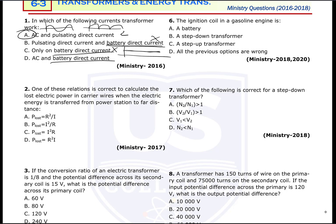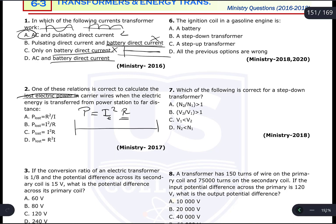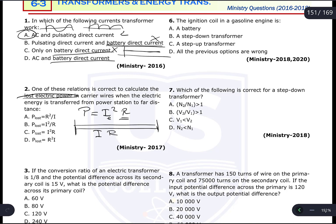Question 2: Which relation correctly calculates the lost electric power in wires when electric energy is transferred from power stations over long distances? The power equation for a resistor is I² × R, where I is the effective value of the electric current. The cable network between the city and the power station also has resistance, so power lost equals I² × R. This is the correct answer.